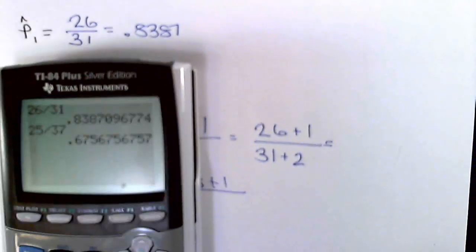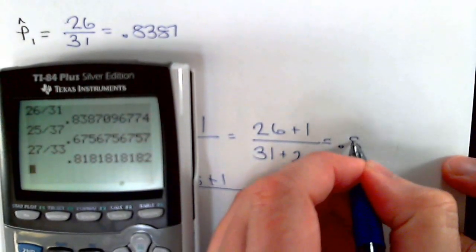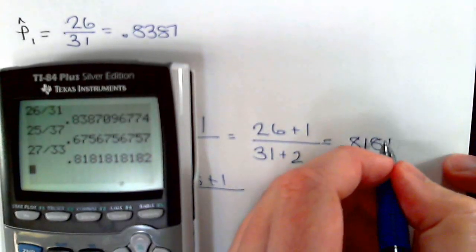Typing this in the calculator, we have 27 divided by 33, which is 0.8182.